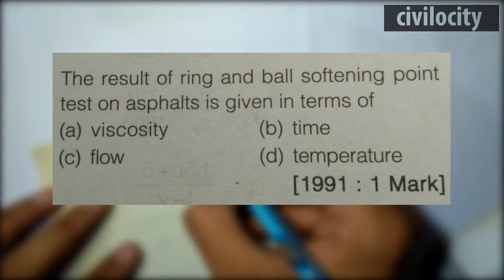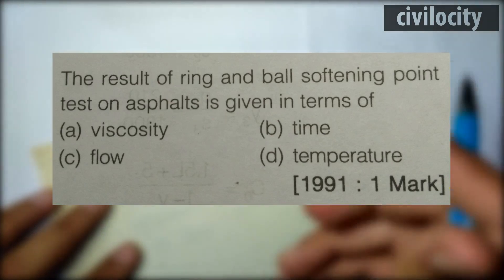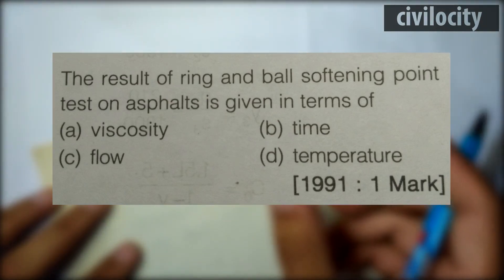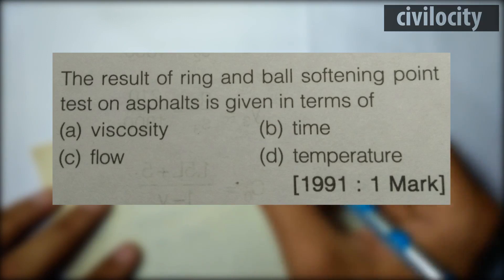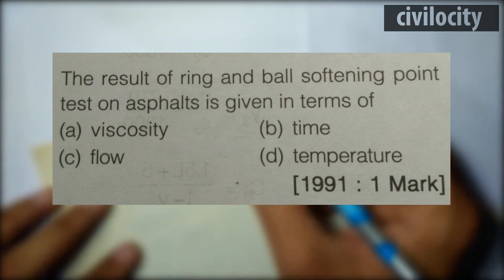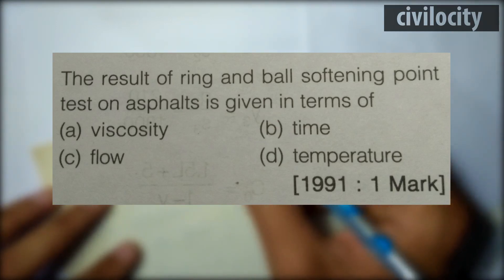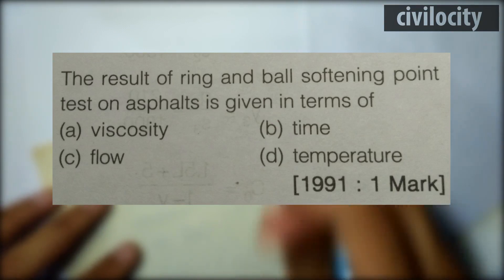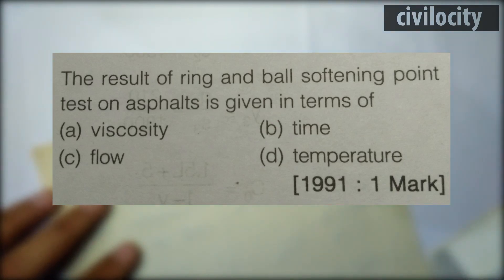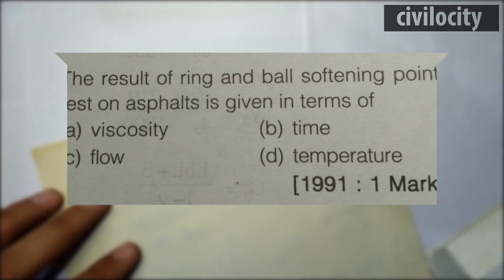The basic thing is we do the ring and ball softening point test to find out the temperature susceptibility. So the answer is the fourth option — temperature. The result is given in terms of temperature.